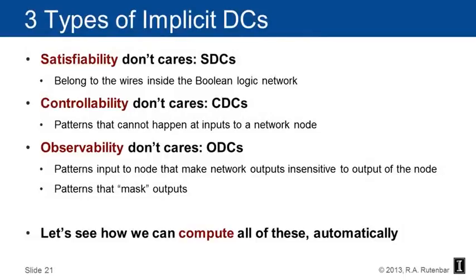In our informal tour of implicit don't cares in multilevel logic networks, we showed a variety of different kinds of don't cares that we could extract. We did it by basically staring at the structure of the logic network and figuring out patterns that were either impossible or rendered things such that we didn't care what the value was. It turns out that implicit don't cares technically come in three categories: satisfiability don't cares, controllability don't cares, and observability don't cares.